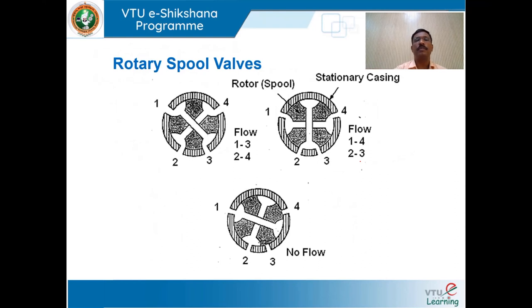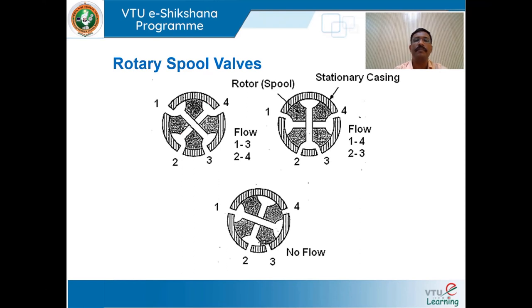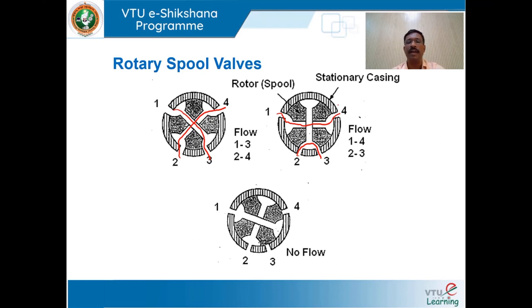We shall discuss the rotary spool valve, as opposed to the sliding spool valve discussed so far. In the rotary spool valve, the spool rotates within the valve body. In one position, port 2 is open to 4 and port 1 is open to 3. When the spool rotates, port 2 is open to 3 and port 1 is open to 4. Rotating again results in no flow across the ports.